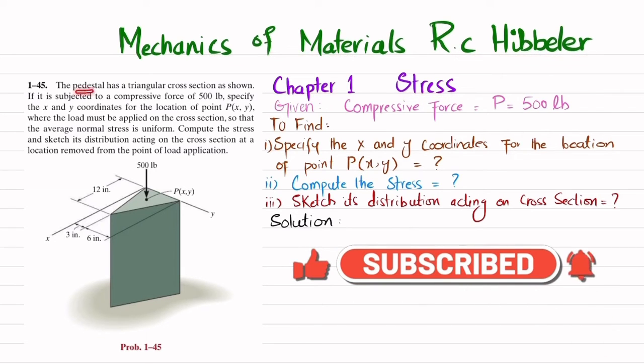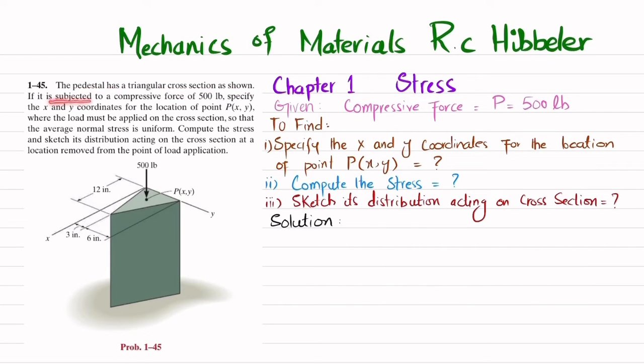The statement is: the pedestal has a triangular cross section as shown. If it is subjected to a compressive force of 500 pounds, specify x and y coordinates for the location of point P(x,y) where the load must be applied on the cross section so that the average normal stress is uniform. Compute the stress and sketch its distribution acting on the cross section at a location removed from the point of load application.